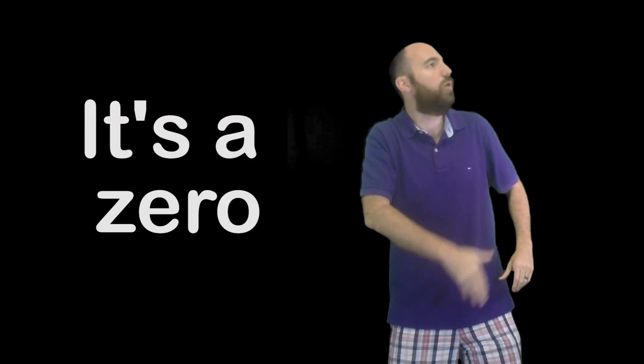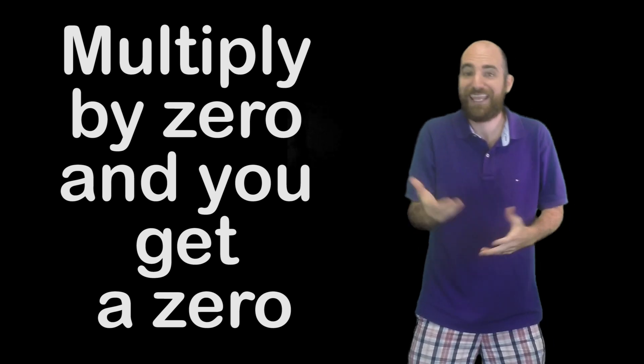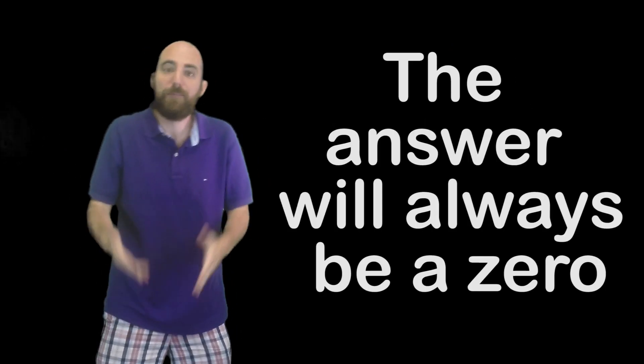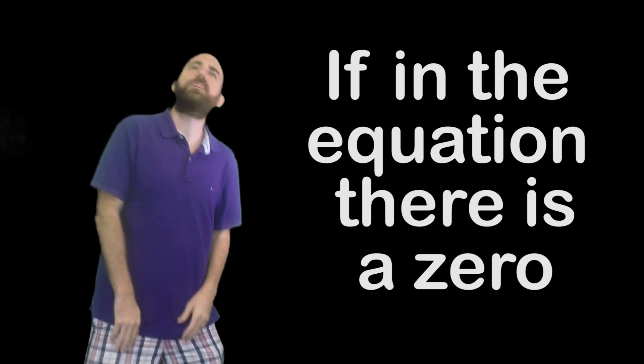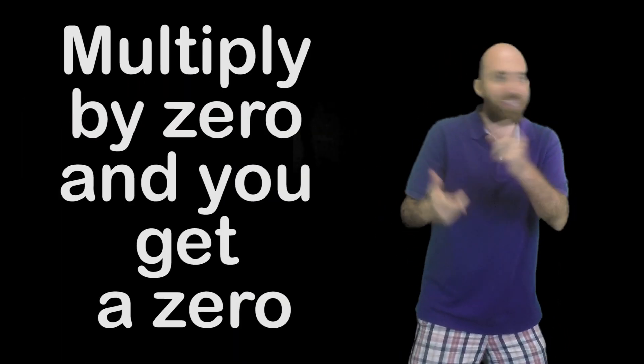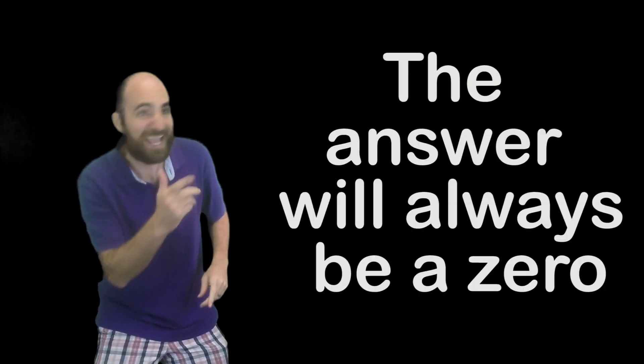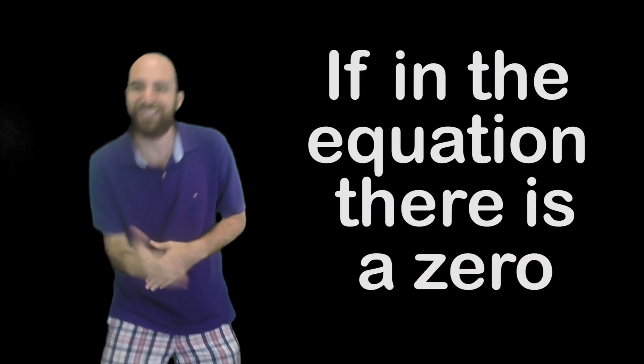It's a zero. Multiply by zero and you get a zero, the answer will always be a zero. If in the equation there is a zero, it's a zero. Multiply by zero and you get a zero, the answer will always be a zero. If in the equation there is a zero.